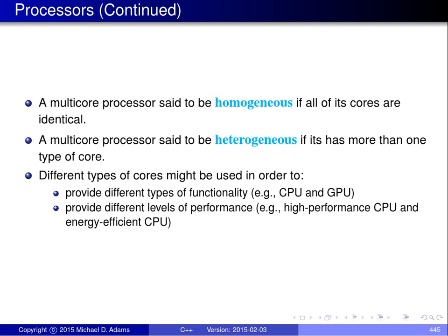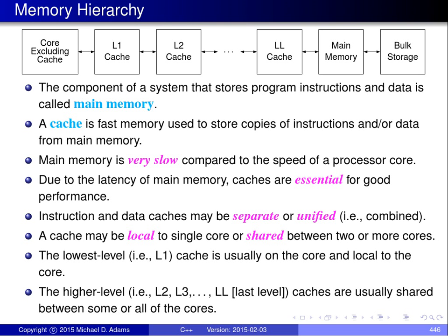Another reason for having different types of cores is to provide different levels of performance. You might have a high-performance CPU core that can do a lot of computation per unit time but consumes a lot of power — which matters in mobile applications running off a battery. In addition, you might have an energy-efficient CPU core that can't do as much computation per unit time but uses less power, so battery life is extended. In mobile applications, battery life is an important consideration.